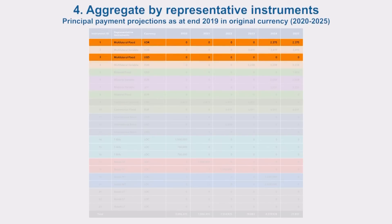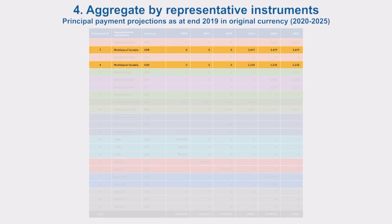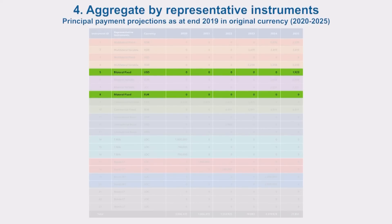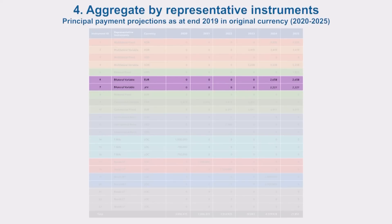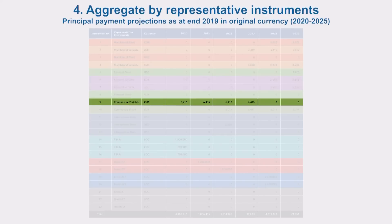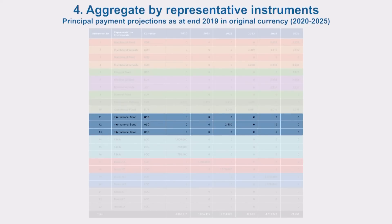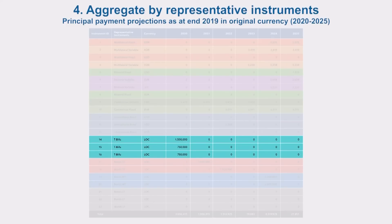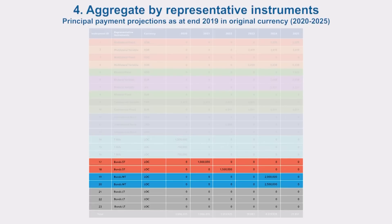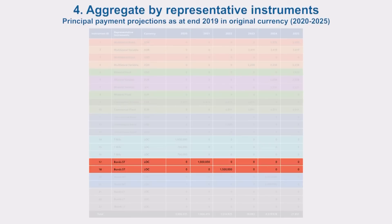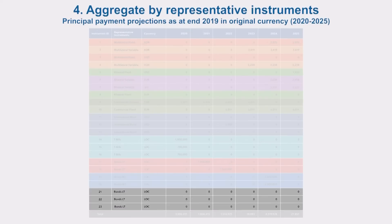For the multilateral fixed category, instruments number 1 and number 3 fall under this category, so we sum these two rows. For multilateral variable, we sum up instruments number 2 and number 4. Bilateral fixed: we sum instruments number 5 and number 8. Bilateral variable: we aggregate number 6 and number 7. Commercial variable: no aggregation is needed since there is only one instrument, number 9. Commercial fixed: again, no aggregation — there is only one instrument, number 10. International bond instruments: numbers 11 to 13 are aggregated here. Treasury bills: instruments 14 to 16 are aggregated for this category. For bonds, short-term instruments are comprised of numbers 17 and 18, medium term 19 and 20, and long term numbers 21 to 23.